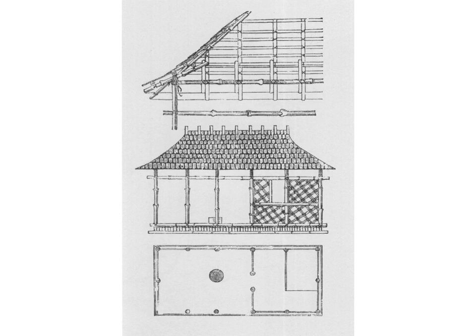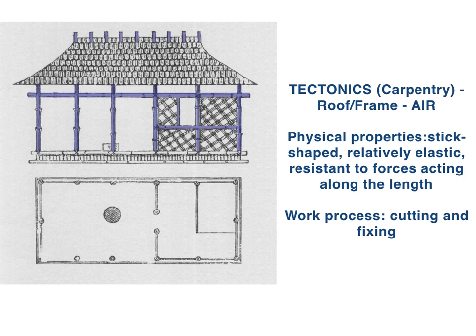Semper's Practical Aesthetics includes a drawing and a written description of the Caribbean hut, which I will now use to demonstrate the four elements. To begin with, tectonics: in Semper's system, any framework of posts, beams, and rafters is a tectonic element. The framework of the hut was made from bamboo, colored dark blue in this drawing. The tectonic element is described as a process of joining stick-shaped, elastic components resistant to forces working along the length. The tectonic process produces three-dimensional lattice structures that are open and relatively lightweight, which is why tectonics is linked to the natural element air.